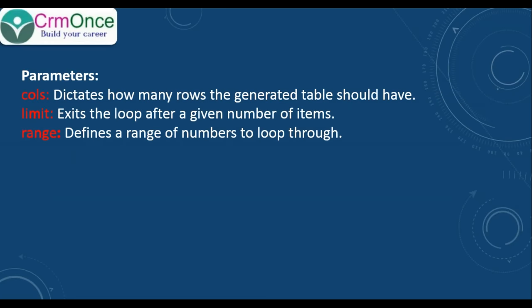Next, it has the parameters: cols - it dictates how many rows the generated table should have, limit - it exits after the given number of items, and range - it defines the range of numbers to loop through. So these are the three iteration tags we have in liquid template code: one is for, another one is cycle, and another one is table row.